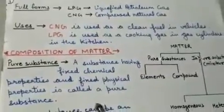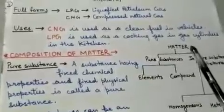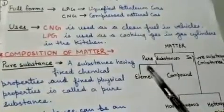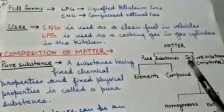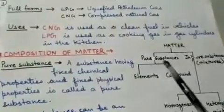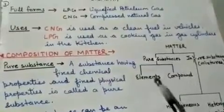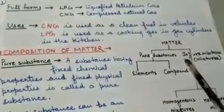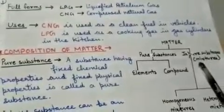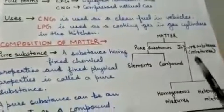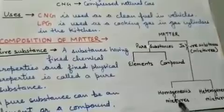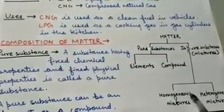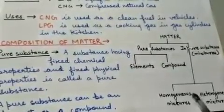The next topic is composition of matter. Matter is classified into two parts: pure substances and impure substances. Pure substances are further classified into elements and compounds, while impure substances are known as mixtures. Mixtures are further classified into homogeneous mixtures and heterogeneous mixtures. This we will study in another class.